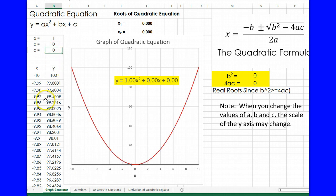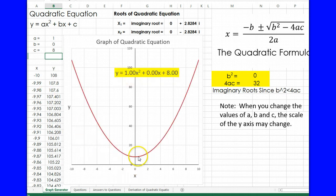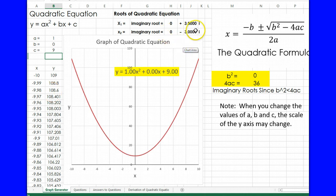If I add a constant c of 8, it brings the curve up—it no longer crosses the axis. It actually has imaginary roots. Let me make it 9. You can see the roots are imaginary: plus and minus 3i, or plus or minus 3 times the square root of minus 1.